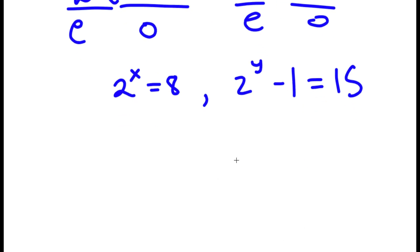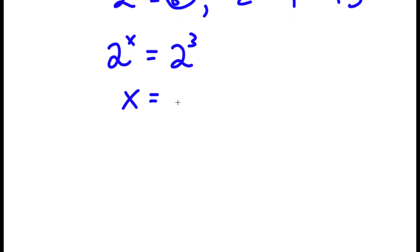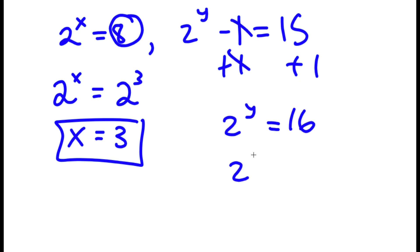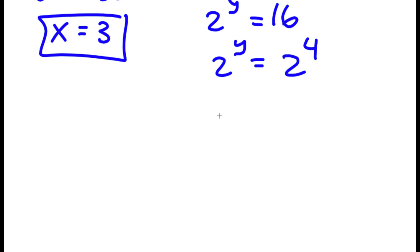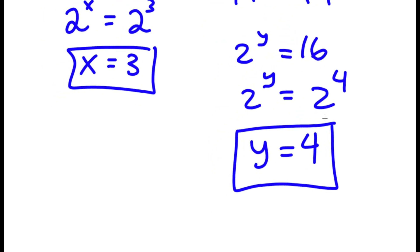Let's first solve 2 to the power of x equals 8. Since 8 is the same as 2 to the power of 3, I have 2 to the power of x equals 2 to the power of 3, meaning x equals 3. Now for 2 to the power of y minus 1 equals 15, adding 1 to both sides gives 2 to the power of y equals 16. Since 16 is 2 to the power of 4, I get y equals 4. So my values are x equals 3 and y equals 4.